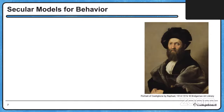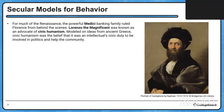Lorenzo the Magnificent was known as an advocate of civic humanism. These ideas came from ancient Greece — civic humanism was the belief that it was an intellectual and civic duty to be involved in politics and to help the community. So civic humanism is a very active concept: you have to do something in your community.